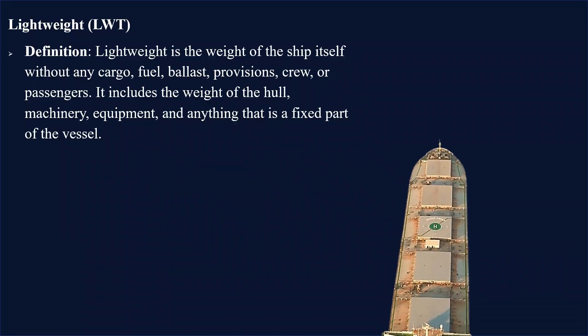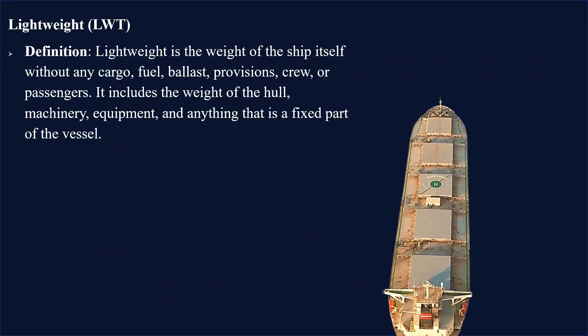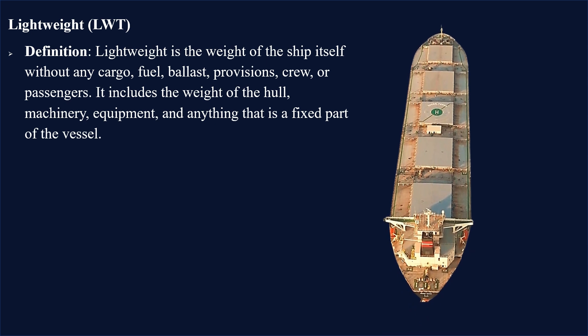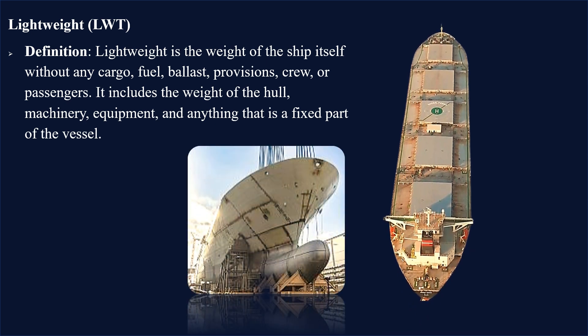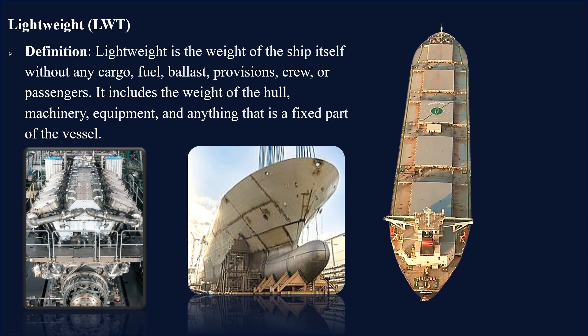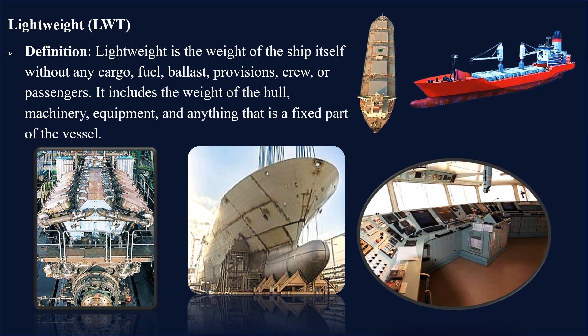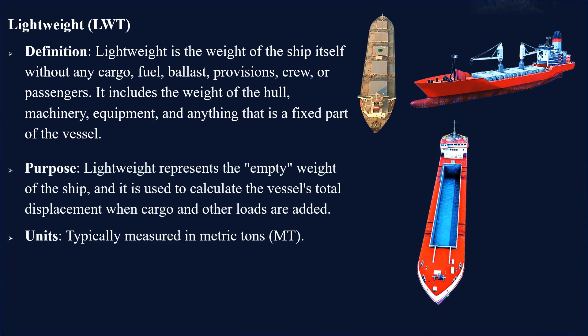Lightweight is the weight of the ship itself without any cargo, fuel, ballast, provisions, crew, or passengers. It includes the weight of the hull, machinery, equipment, and anything that is a fixed part of the vessel. It represents the empty weight of the ship and is used to calculate the vessel's total displacement when cargo and other loads are added, typically measured in metric tons.